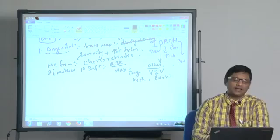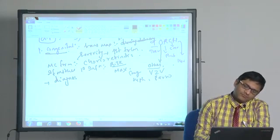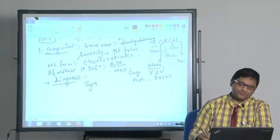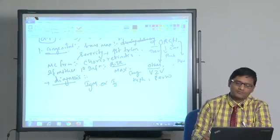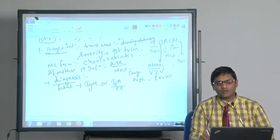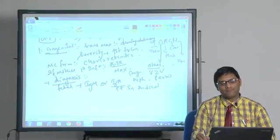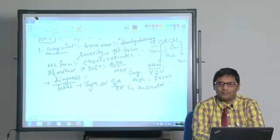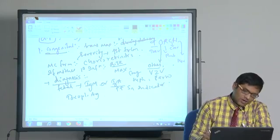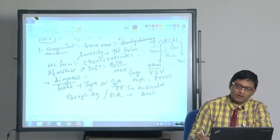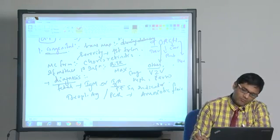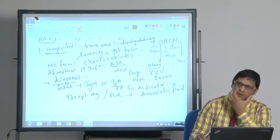Congenital toxoplasmosis diagnosis is by detection of IgM antibody or IgA antibody in the fetus. IgA antibody is more sensitive indicator than IgM. Other than that, toxoplasma antigen can be detected, or you can go for PCR detecting genes in amniotic fluid.